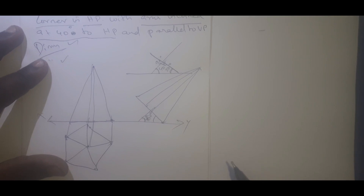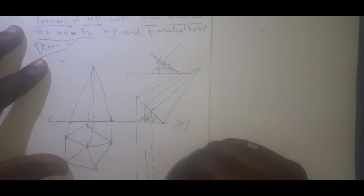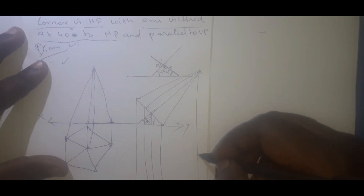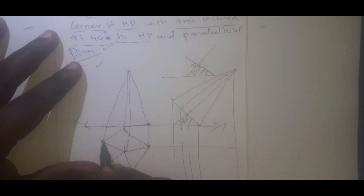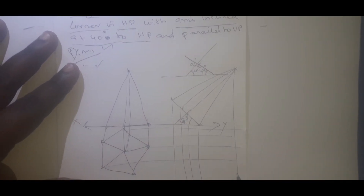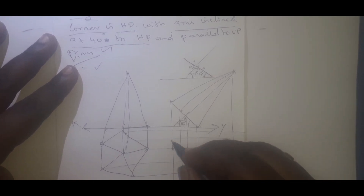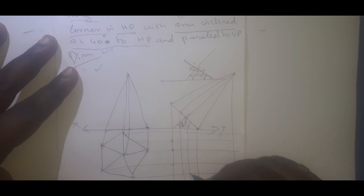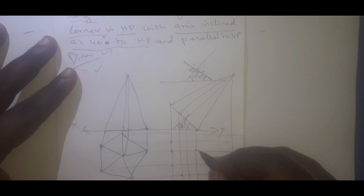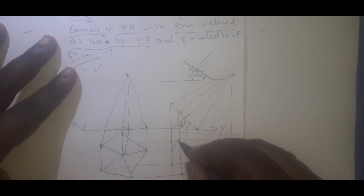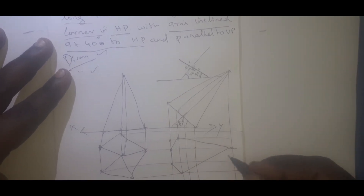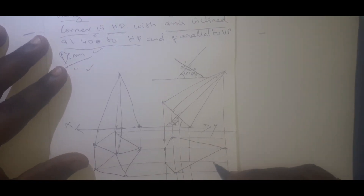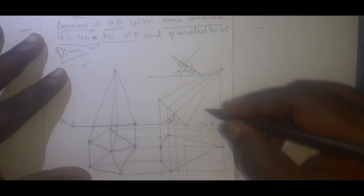Now, what we did in the planes problem, here also we have to do the same way — we have to project all the lines. The top is also projected, but in the planes only the base plane will be projected. Here another line is added. Now I am going to draw all the horizontal lines, and we have to gently mark all the points.